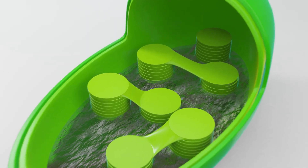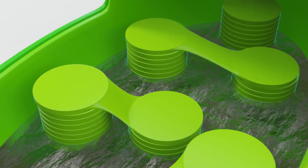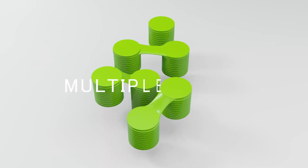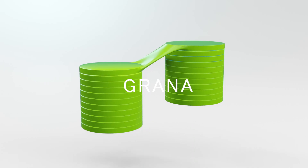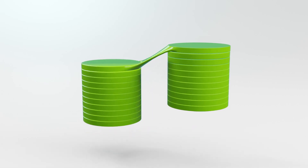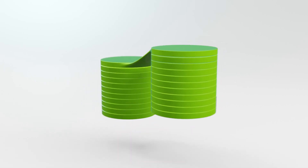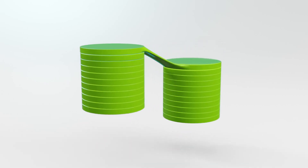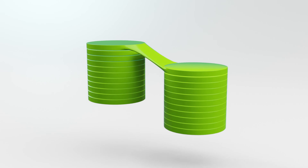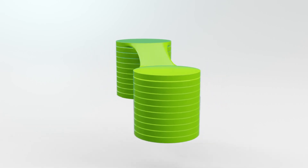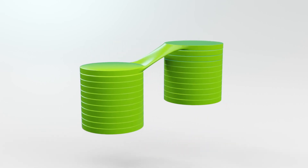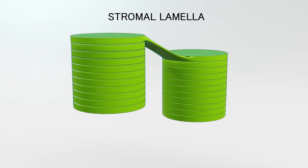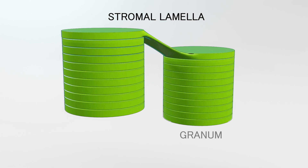By diving inside, we see a number of thylakoids stacked as grana, or individually as granum, with stromal lamellae between them. Thylakoids are disks actually connected by lamellae and piled up as granum.